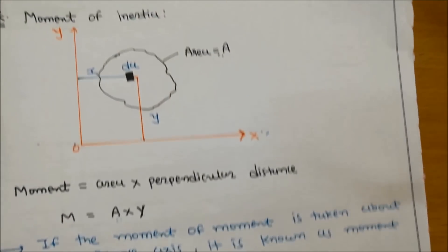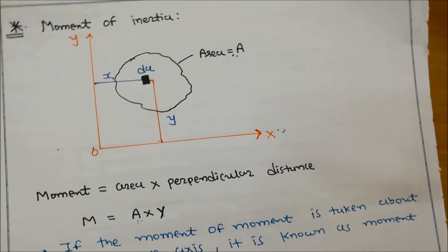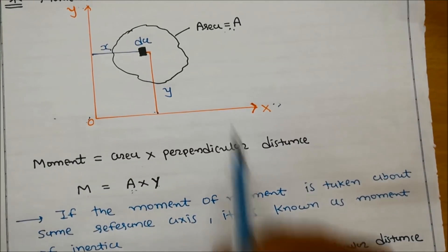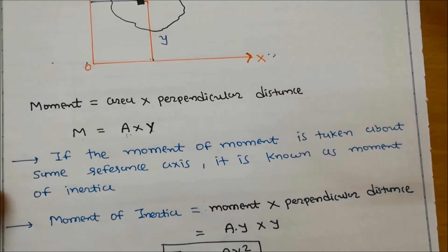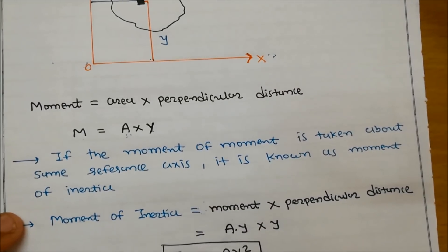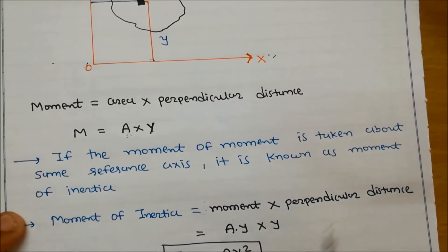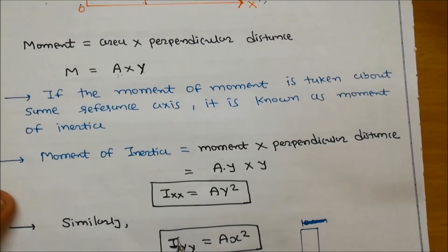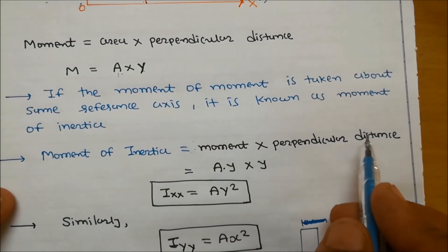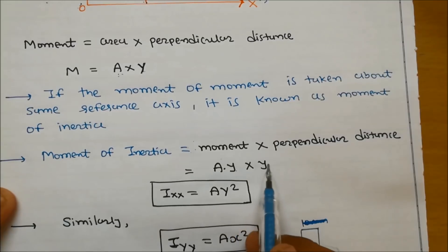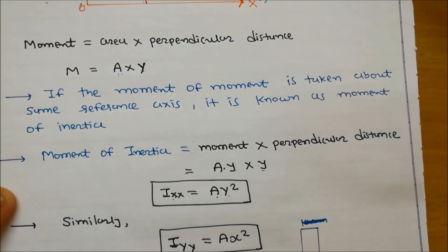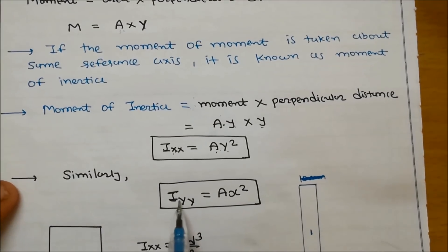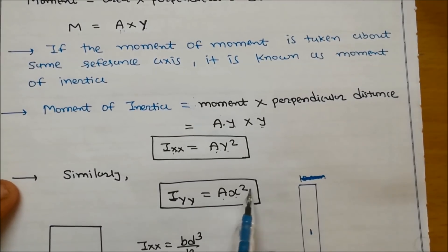Again, to repeat: moment of inertia means second moment of area. Moment equals area multiplied by perpendicular distance y, so moment equals A times y. If the moment of moment is taken about the same reference axis it is known as moment of inertia, which equals A times y squared. So Ixx equals Ay square. Moment of inertia about the xx-axis is Ay square, and similarly Iyy about the yy-axis equals Ax square.